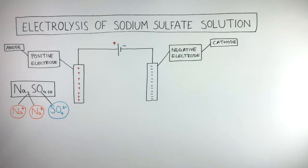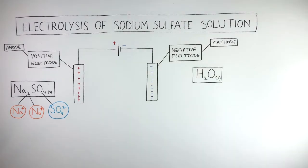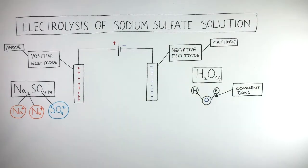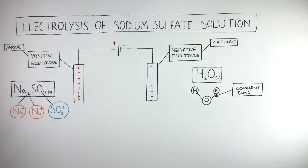The molecular formula of water is H2O (l for liquid). Water is a simple molecule. This ball and stick model shows how there are covalent bonds between the hydrogen and oxygen atoms. When the ionic compound sodium sulfate dissolves in the water, the water ionizes into hydrogen ions and hydroxide ions.